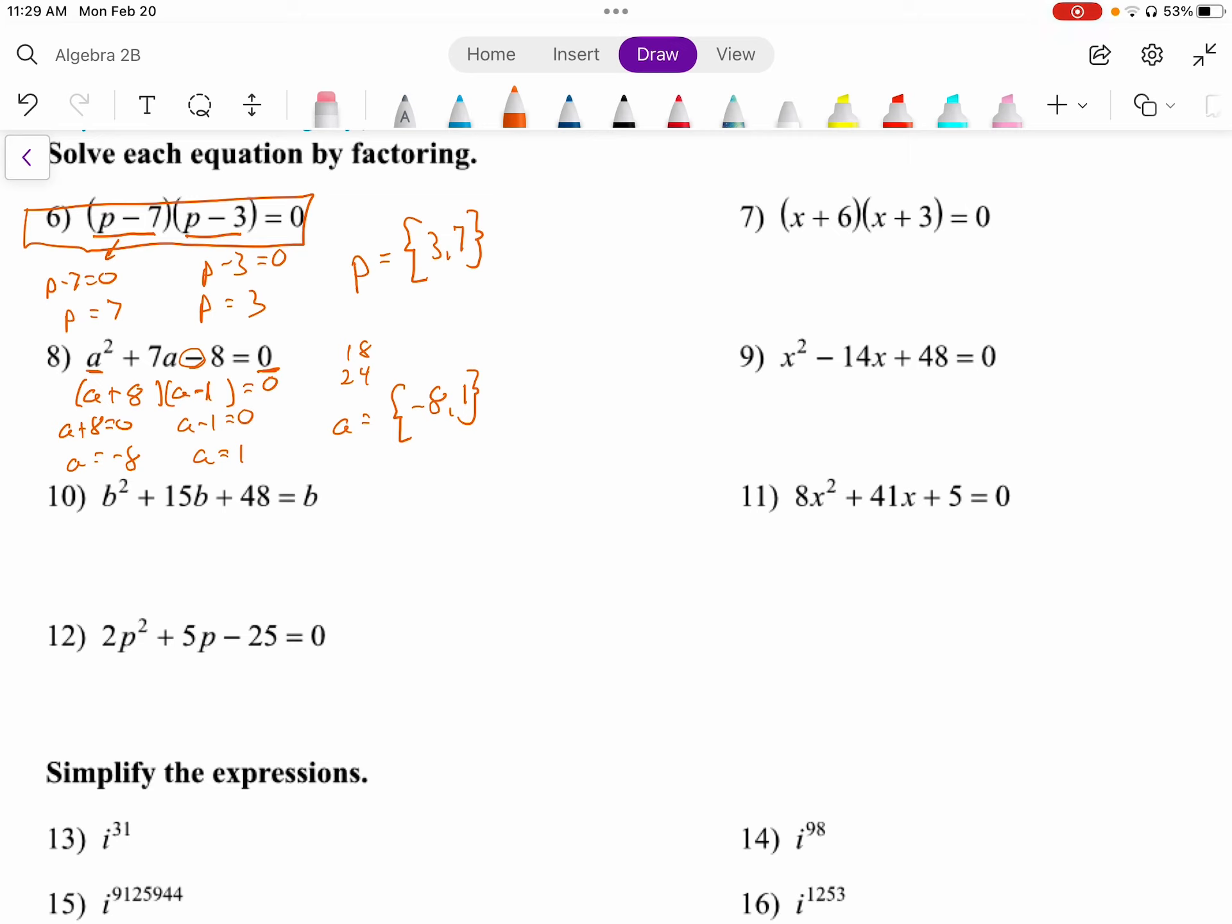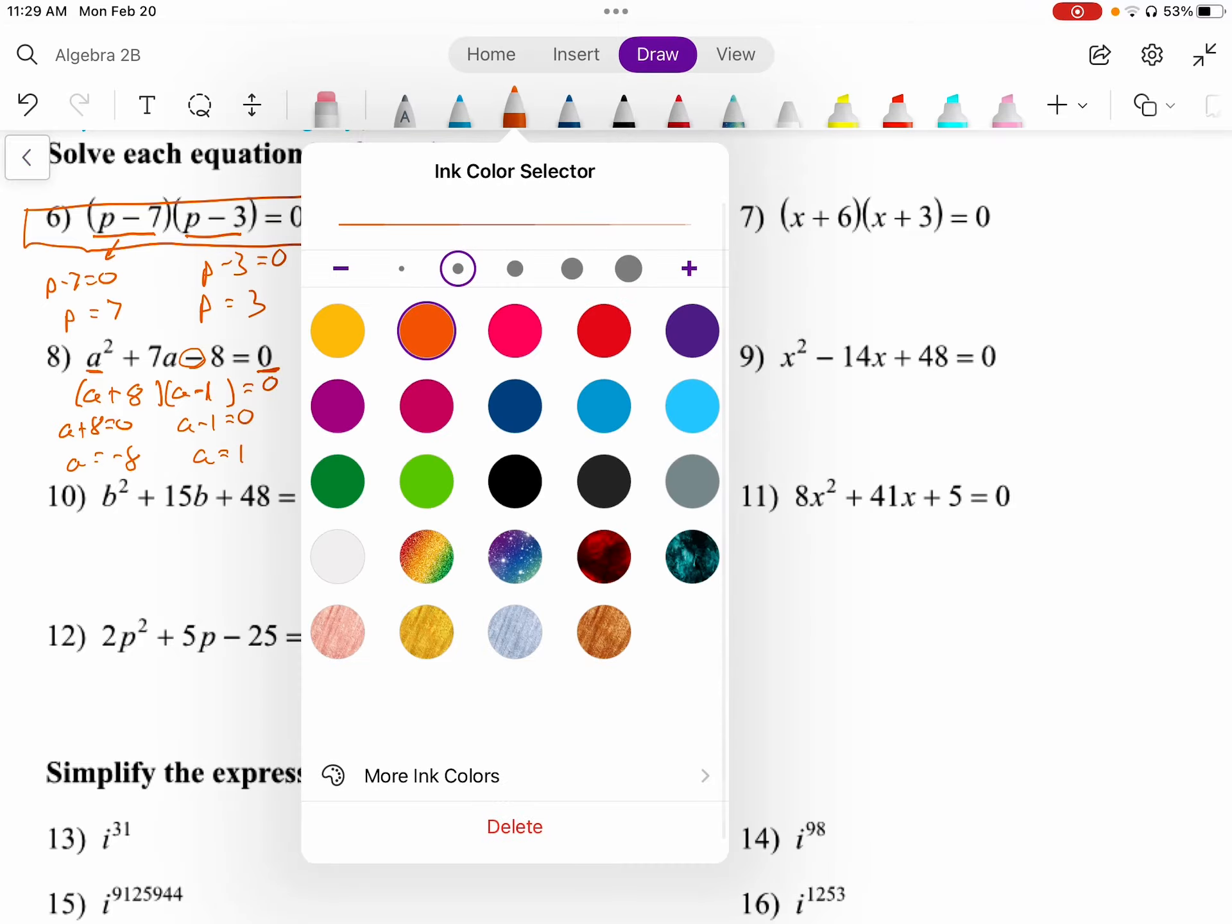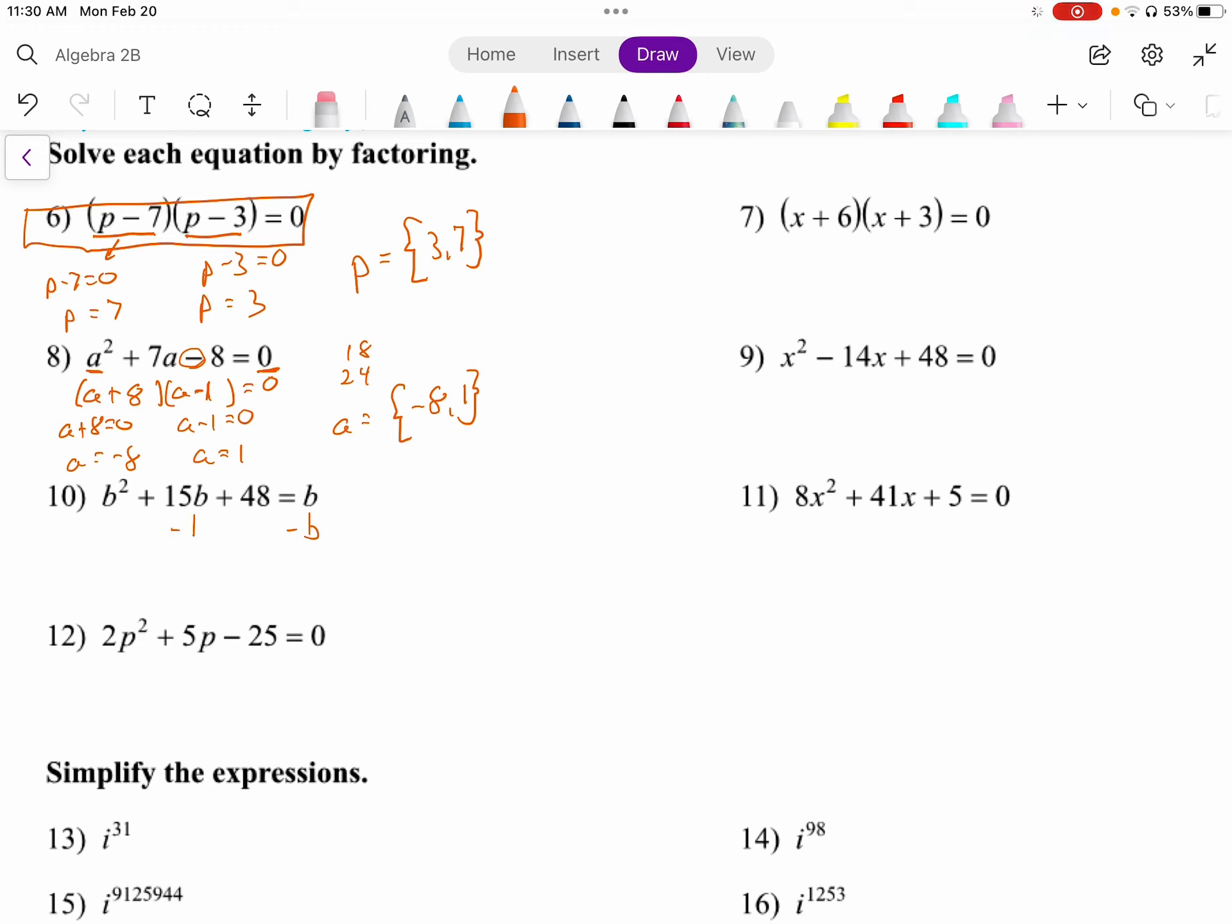Number 9 is similar to number 8. Number 10 does not have a 0 on the right side, so we need to make sure we subtract b from both sides, which gives us b squared plus 15b plus 48 equals 0. We have a lot of factors of 48, 1 and 48, 2 and 24, 3 and 16, 4 and 12, 6 and 8. And so it looks like this is going to be b plus 8 times b plus 6. If we think through solving those, b will either equal negative 8 or negative 6.